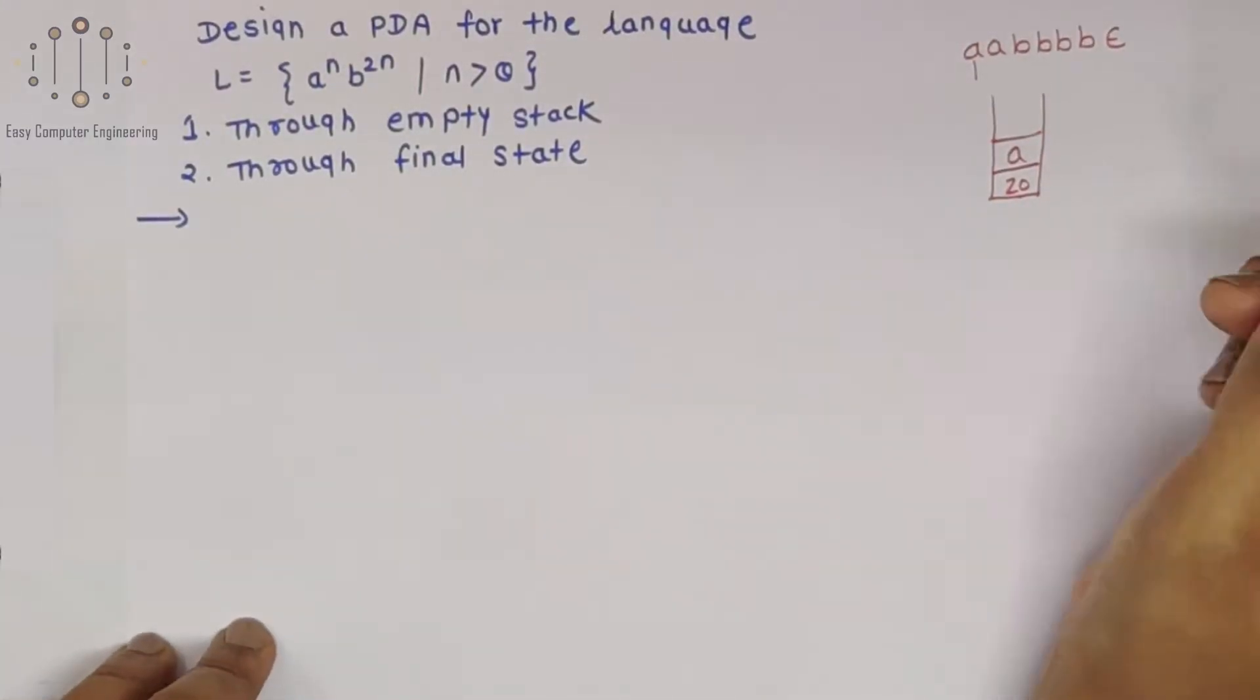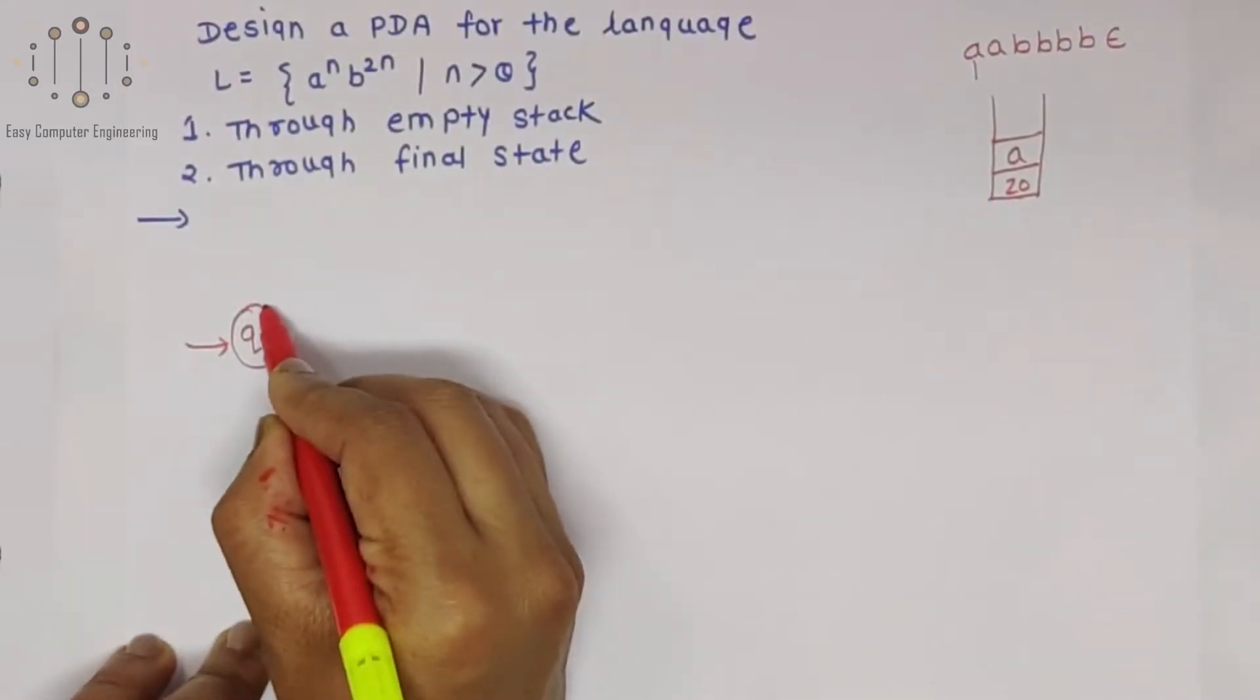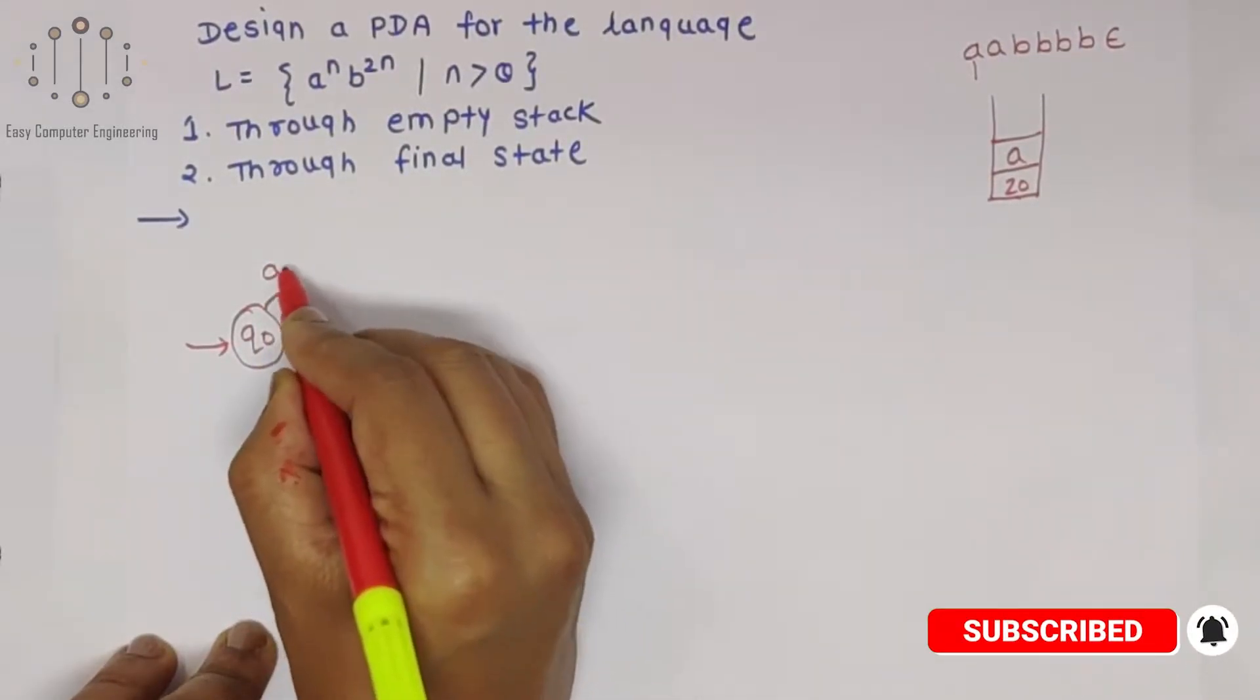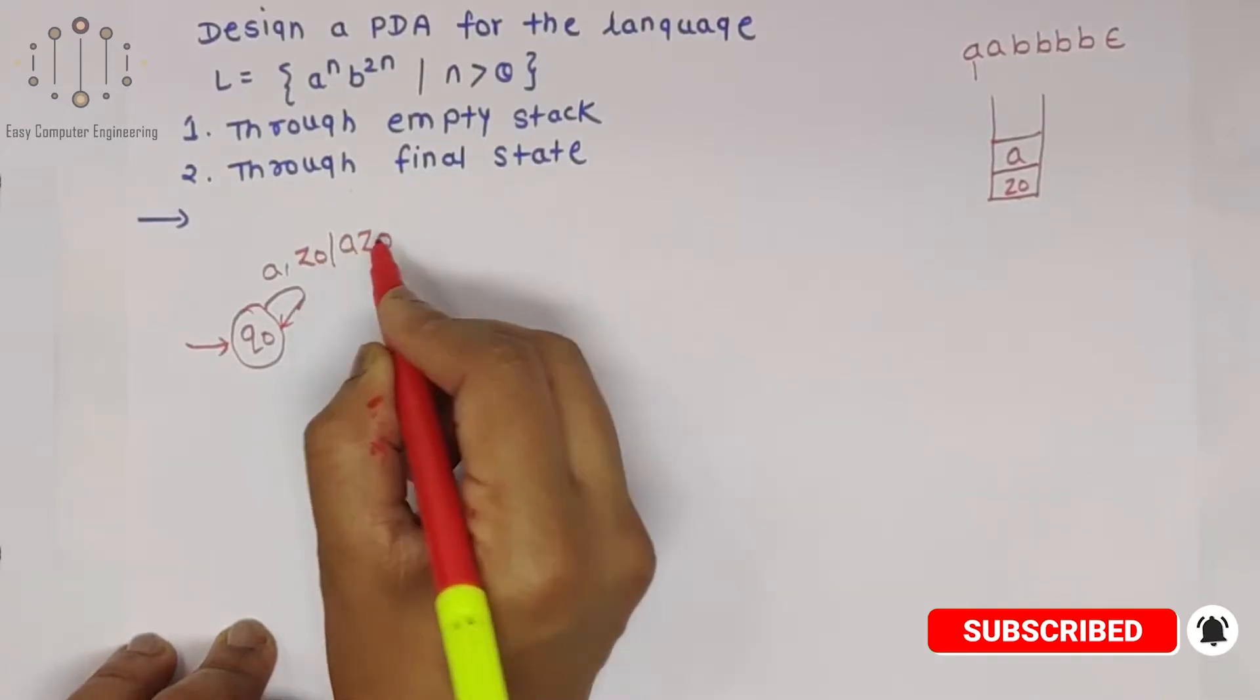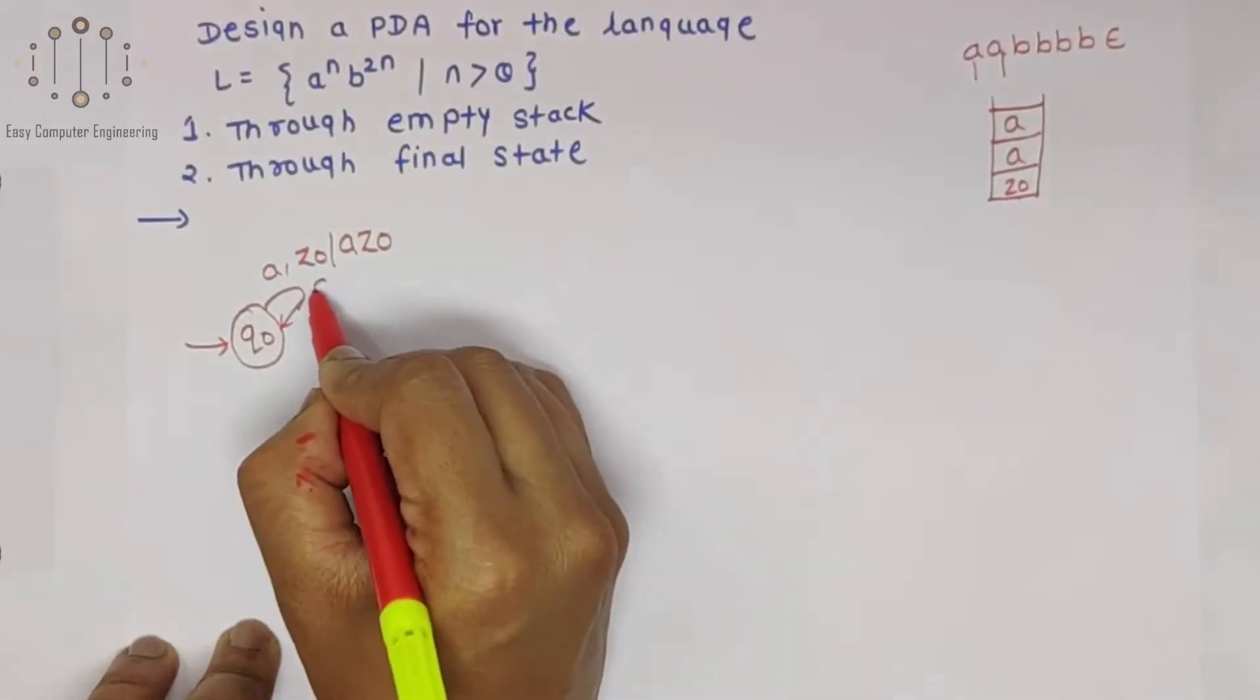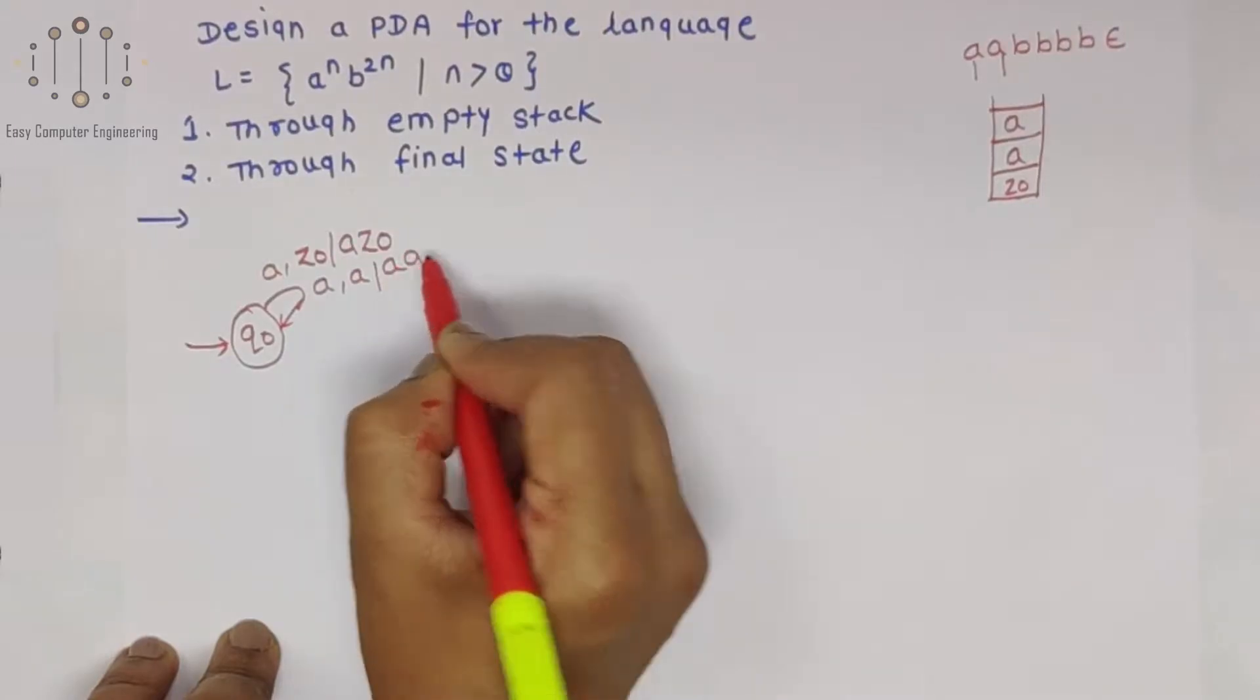We will show like this: in Q0 state, incoming is A, in stack is Z0, push into stack A Z0. Next A push into stack, so incoming is A, in stack is A, push into the stack.